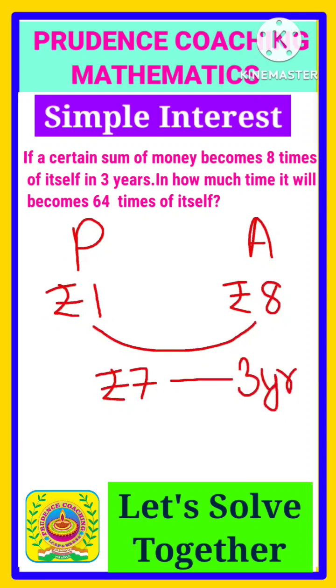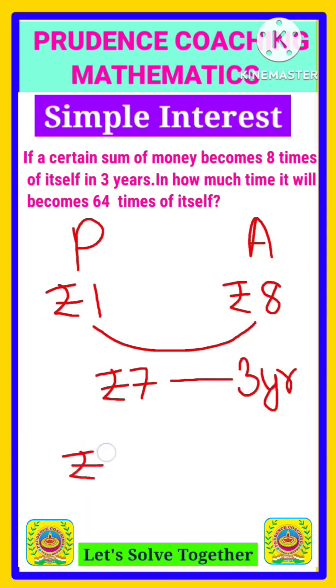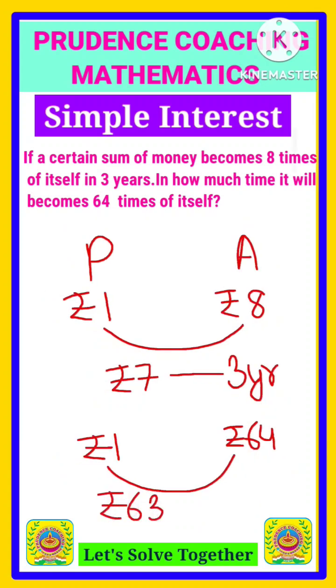This seven rupees is earned in three years. Now it is said in the question that the principle is becoming 64 times, that means if the principle is one, it is becoming one into 64, that is 64 is the amount. Now the gap, that is simple interest, will be 64 minus one, that is rupees 63.